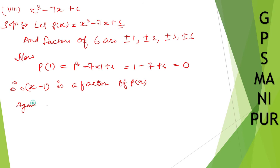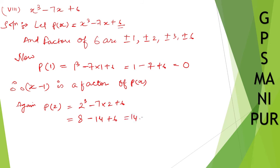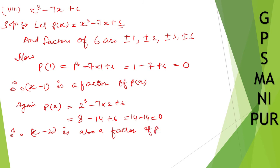Let us take p of 2. p of 2 will be 2 cubed minus 7 into 2 plus 6. 2 cubed is 8, minus 7 into 2 is 14, plus 6. 8 plus 6 is 14, minus 14 is 0. Therefore, x minus 2 is also a factor of p of x.